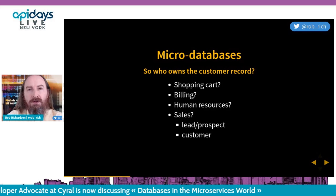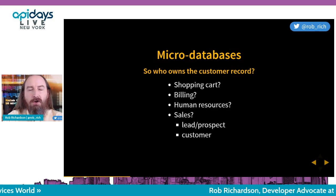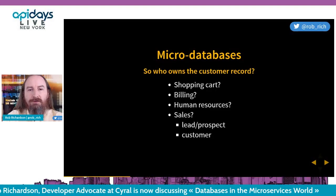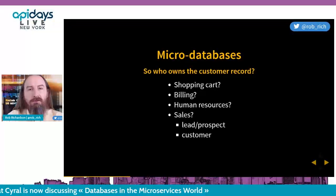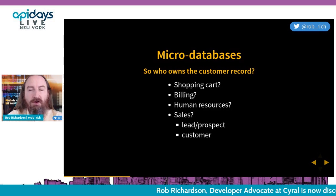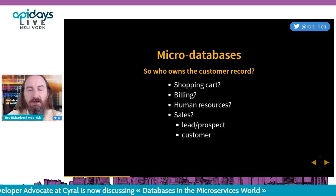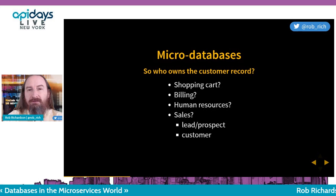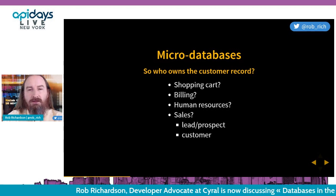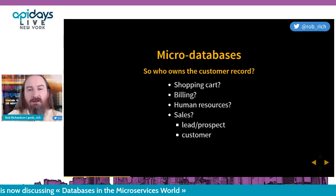The answer: create a new customer microservice and customer micro database with just two columns — one with the account number, one with the primary key. All other services call that customer microservice to create a new customer or to resolve a primary key into an account number. All other details get stored in their associated microservices. Shopping cart stores the last known address; billing stores credit card numbers in its own customer profile; sales stores the first name, last name, and phone number for a new lead, then calls the customer microservice when ready to convert that lead into a customer.